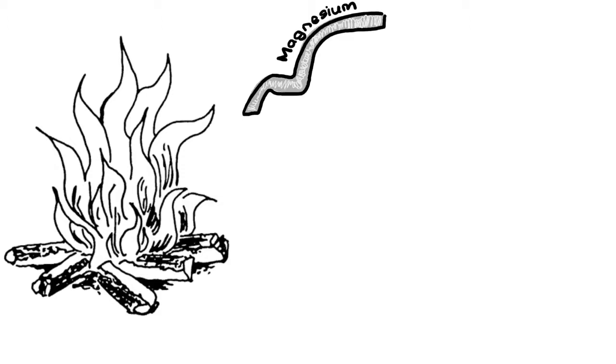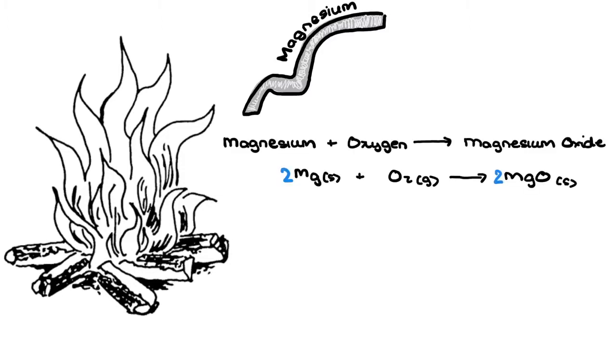For example, when you burn a piece of magnesium strip in a flame, the word equation and chemical equation is like so. As you can see, the product magnesium oxide contains oxygen.